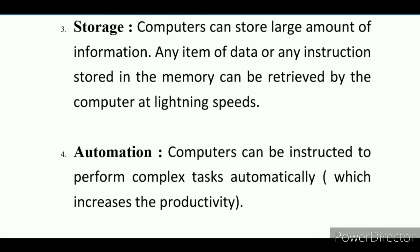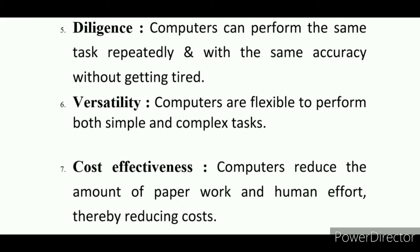Number four: Automation. Computers can be instructed to perform complex tasks automatically. A computer can handle many complex tasks quickly and easily. Number five: Diligence. Computers can perform the same task repeatedly and with the same accuracy without getting tired.